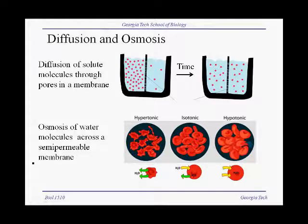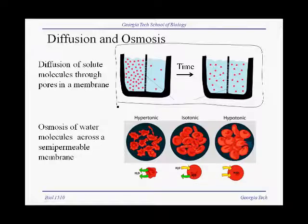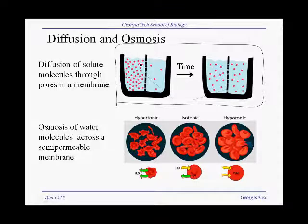Osmosis is a special case of diffusion, and diffusion is a process that results entirely from the random movement of molecules. Let me illustrate diffusion first using this figure up at the top. In this figure we have a chamber that's divided into two. On one side of the chamber we have a high concentration of these red solute molecules, and on the other side we have a very low concentration.